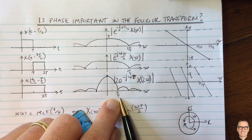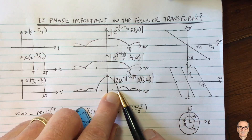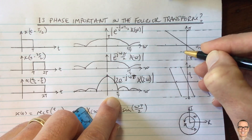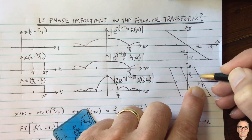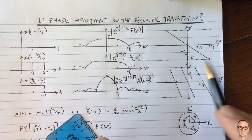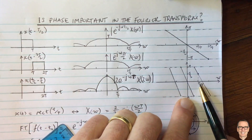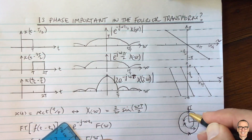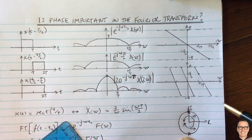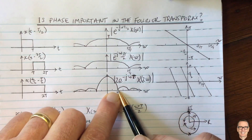Let's verify at ω = π/T: can this plus this really equal zero? At ω = π/T, the phase of the first function is −π/2, and the phase of the second function is +π/2. Those two points are on opposite sides of the unit circle. When we add them together, since they have the same magnitude, the phases cancel exactly — they exactly cancel each other out and we get zero.